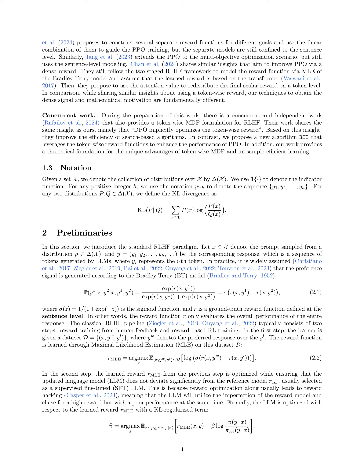In summary, we introduce the standard RLHF paradigm where a prompt X from a distribution in Δ(X) and a response Y = Y_1, Y_2, ..., Y_H are generated by LLMs. The preference signal is modeled using the Bradley-Terry model, and the classical RLHF pipeline involves reward training from human feedback and reward-based RL training. The optimization process includes a KL-regularized term to balance reward optimization and staying close to a reference policy, ensuring a stochastic optimal policy and preventing reward hacking.